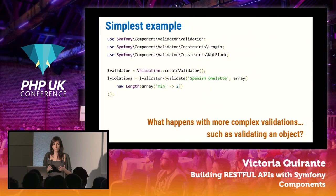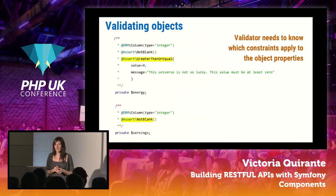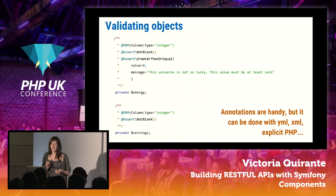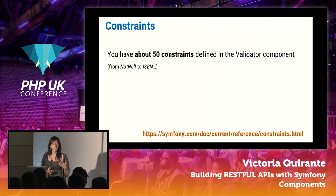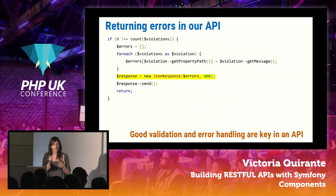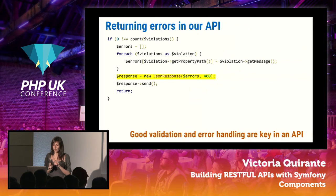When validating complex objects — which is our case — the Validator needs to know which constraints apply to each property. You can do that with annotations, which is very handy, or with YAML, XML, whatever you prefer. The Validator component comes with over 50 built-in constraints, and you can write your own. Crucially, when validation fails and constraints are not met, you have to return errors. In an API, good error handling is as important as good validation — API consumers can get very angry otherwise.